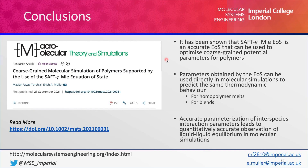In conclusion, it has been shown that SAFT-Gamma-Mie equation of states is an accurate tool for optimizing coarse-grained potential parameters for polymers. Parameters obtained can be used directly in molecular simulations to predict the same thermodynamic behaviour as well as structural properties. Finally, accurate parameterisation of inter-species interaction parameters leads to quantitatively accurate observation of liquid-liquid equilibrium in molecular simulations.